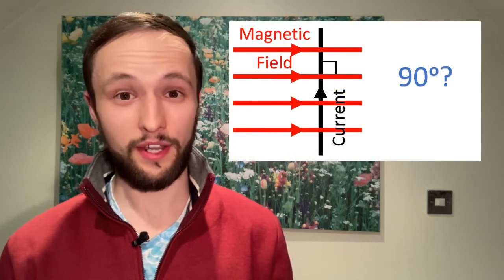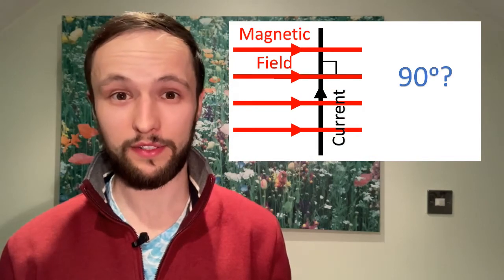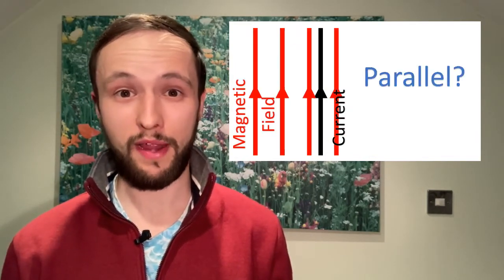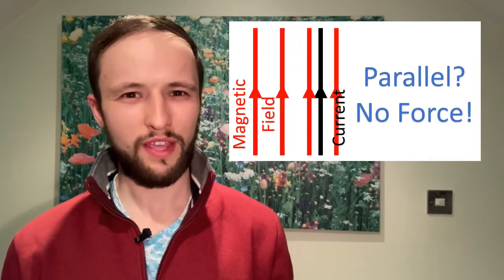Basically, if a current-carrying wire is in a magnetic field and it's at 90 degrees to that magnetic field, it will experience a force. If the current and magnetic field directions are parallel to each other, we don't get a force.